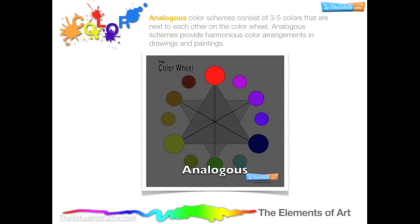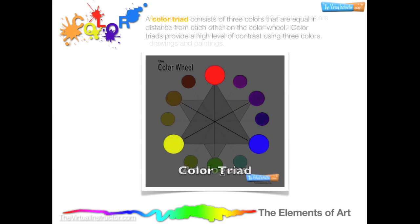Analogous color schemes consist of three to five colors that are next to each other on the color wheel. For example, red, red-purple, purple, and blue-purple is an example of analogous colors.